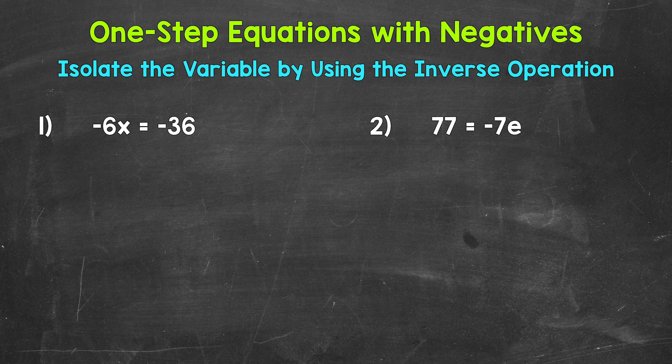Let's jump into number one, where we have negative 6x equals negative 36. We have a number next to a variable, which means we are multiplying. This is negative 6 times x equals negative 36. Whenever you see a number next to a variable, that is representing multiplication. Now we need to isolate that variable of x.